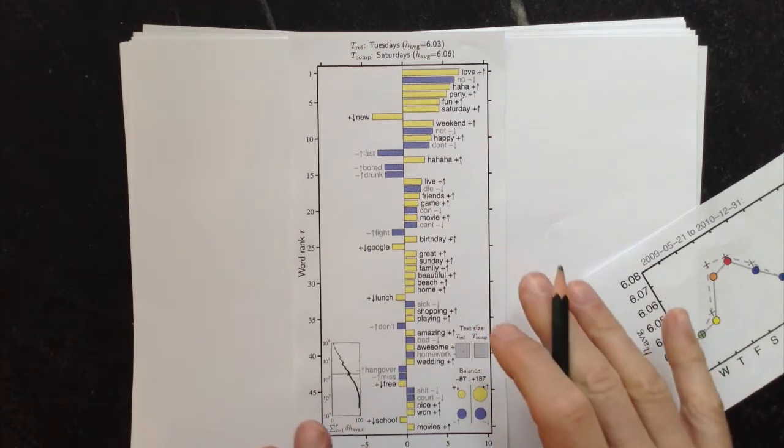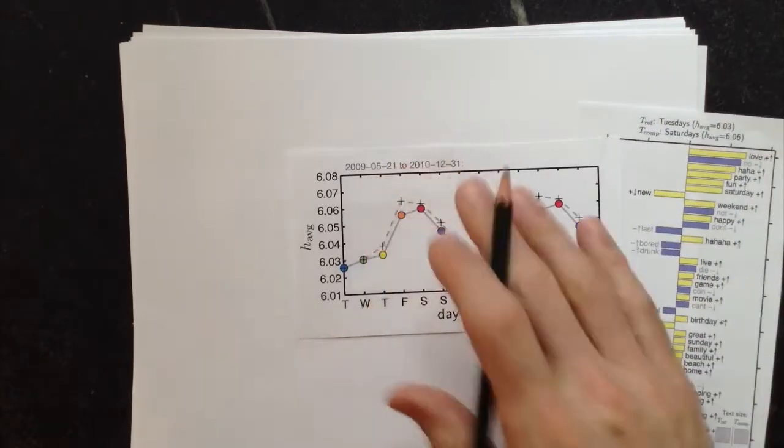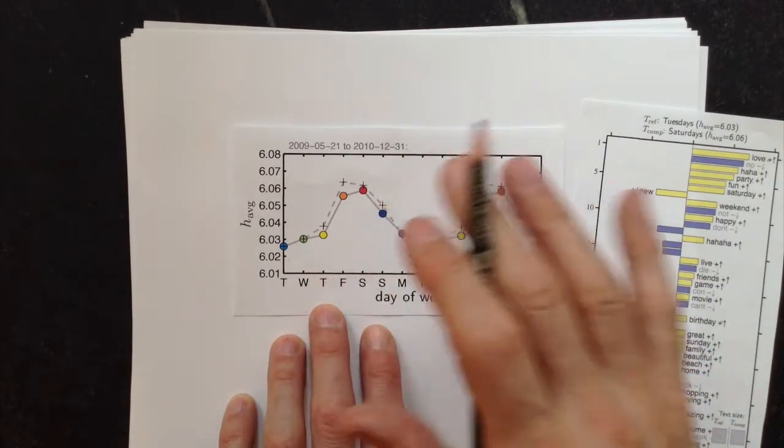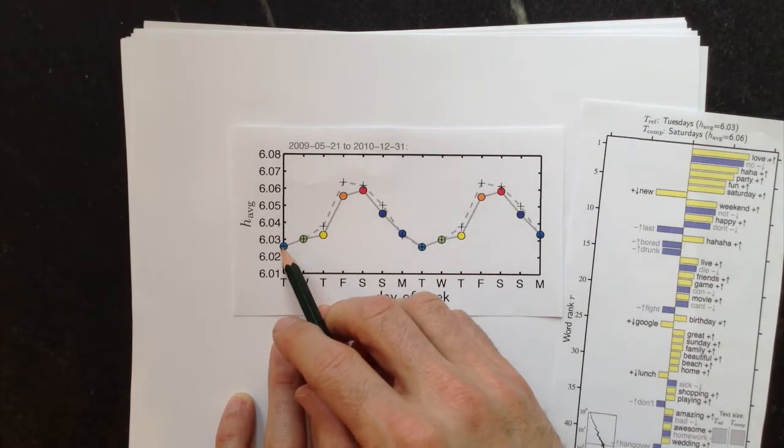Alright, super quick explanation of these word shifts. So here's an example. This is the weekly cycle we've averaged over many days for Twitter, for an output of Twitter. So Tuesday's here,